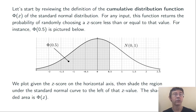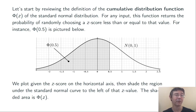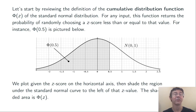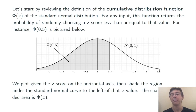Phi of 0.5 is going to be the area of the shaded region. Remember that the total probability should always be 1 — the total area under that bell curve is 1. So another way of interpreting that shaded area is as a percentage of the total area under the bell curve, a total probability.